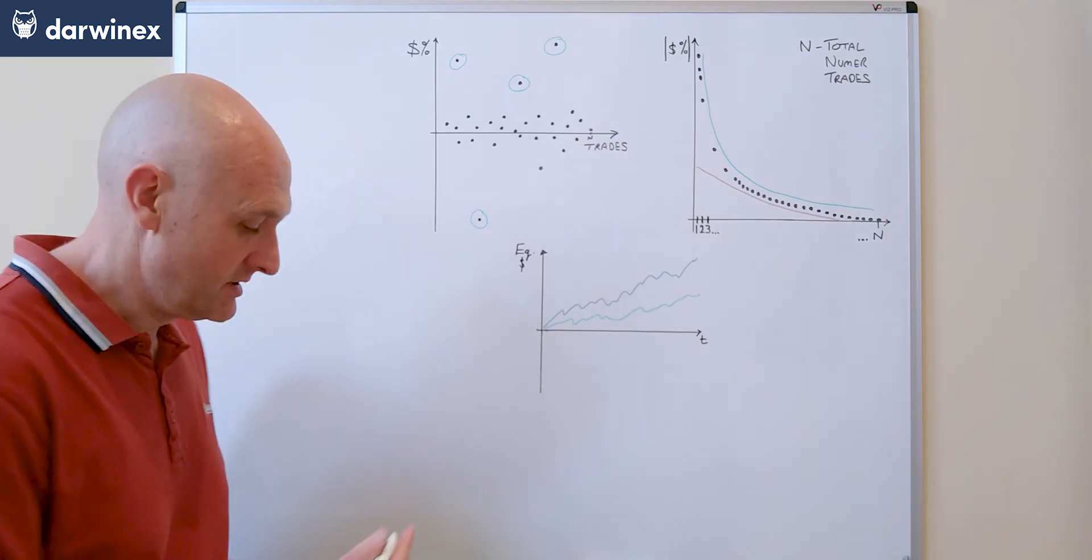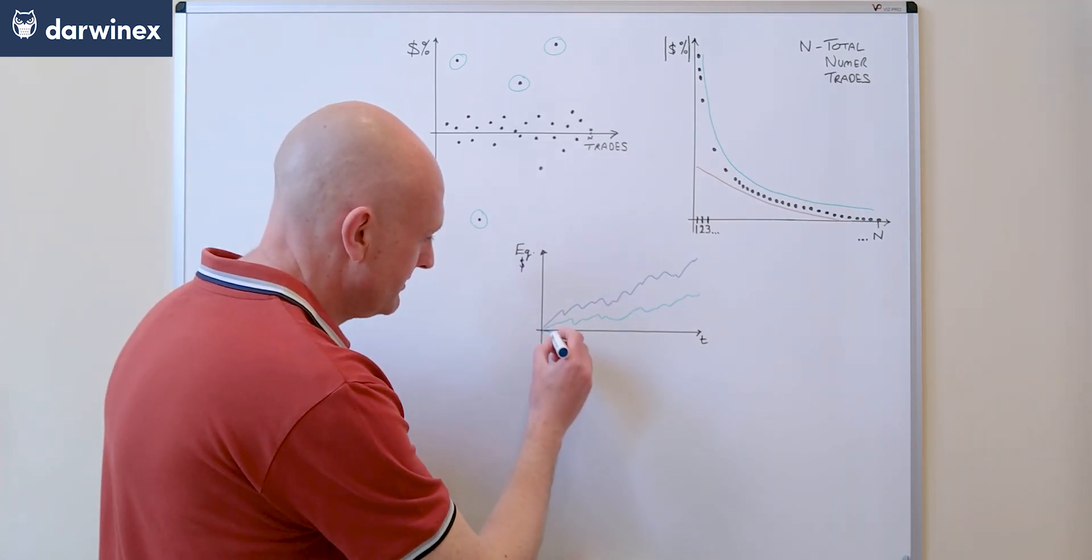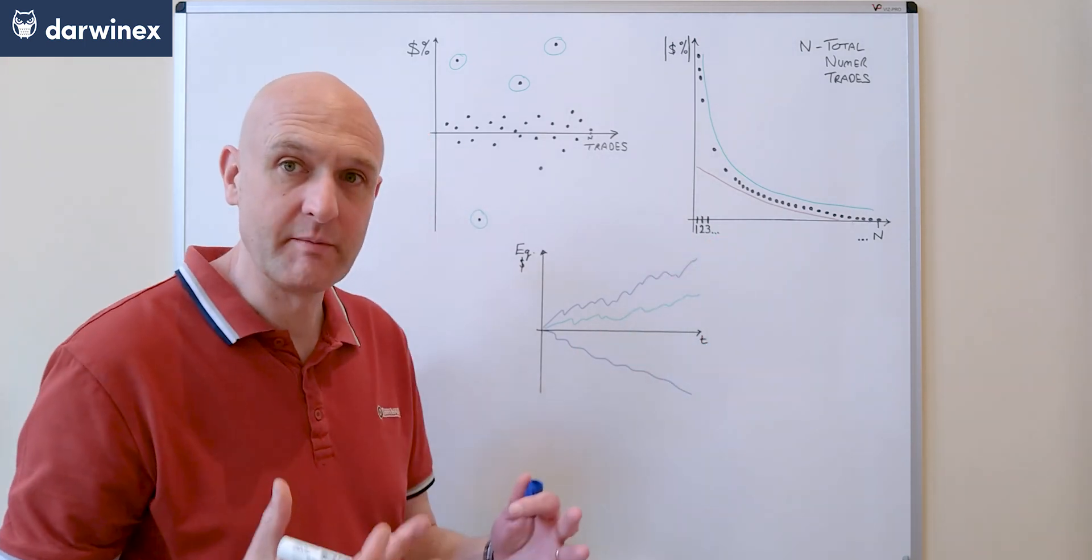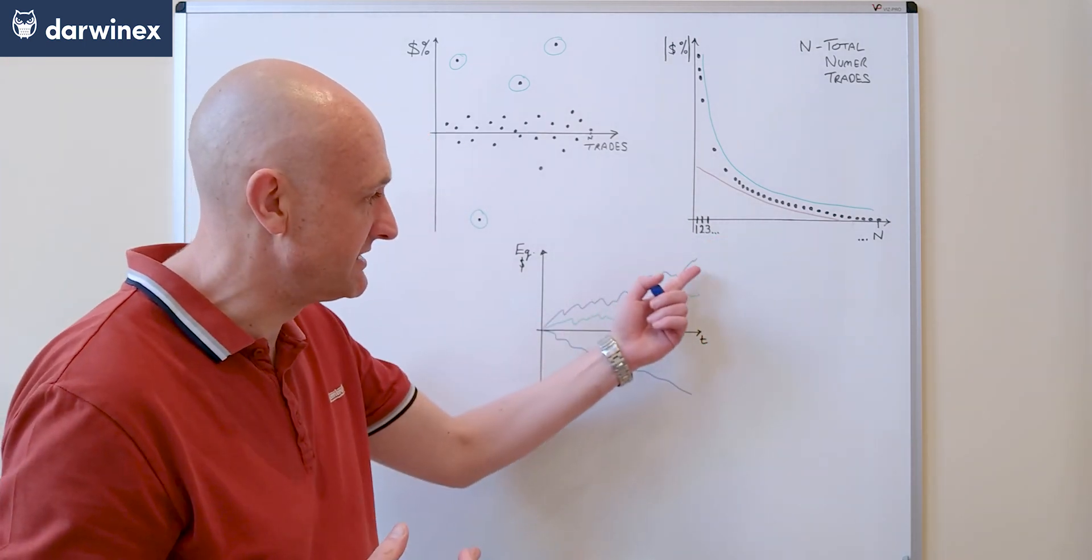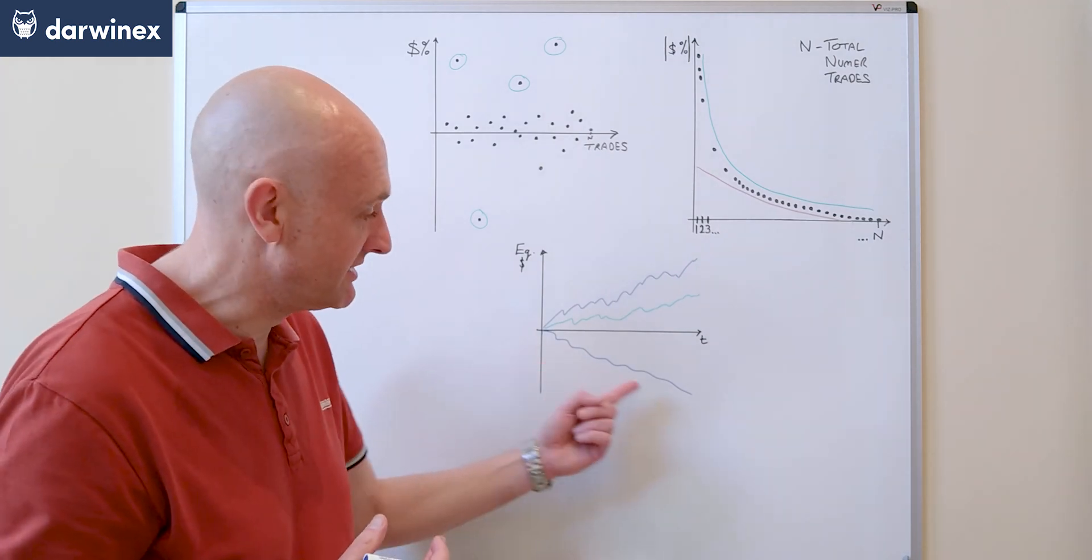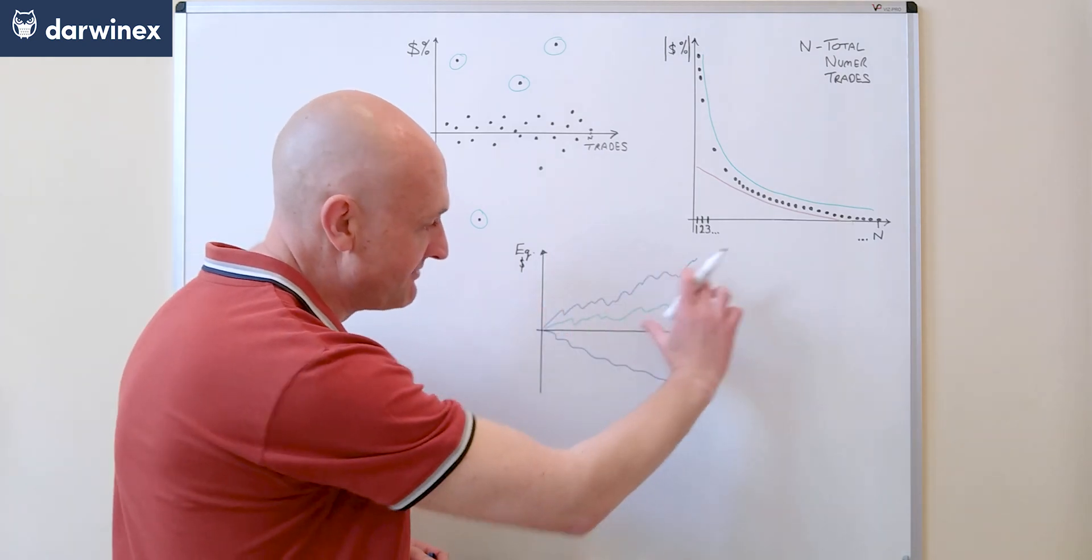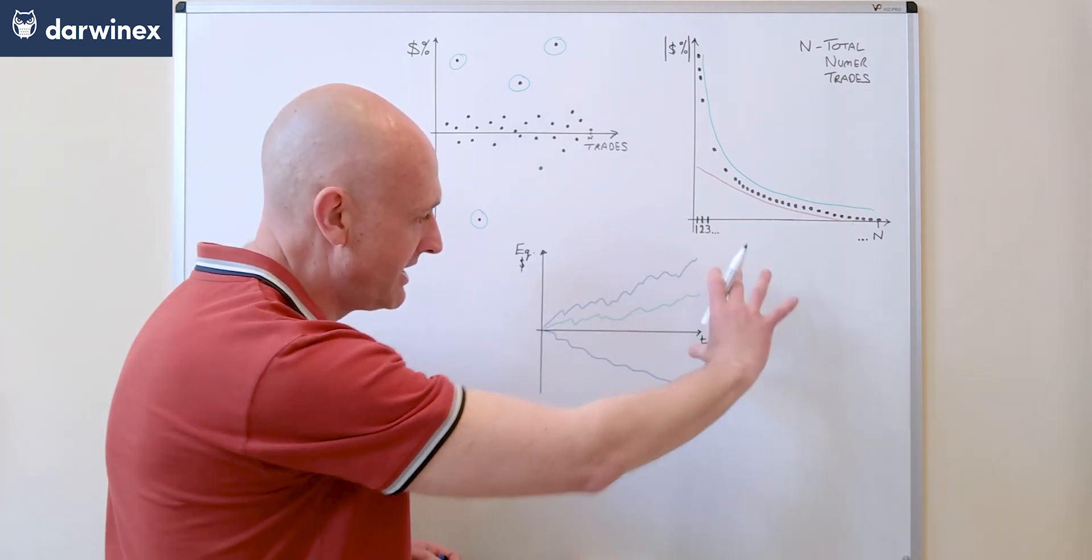As you know, when you perform an optimization, you'll have the best performing parameter values producing the equity curves up here and the worst producing equity curves that may well lose money, and everything else in between, so you get this cone shape.